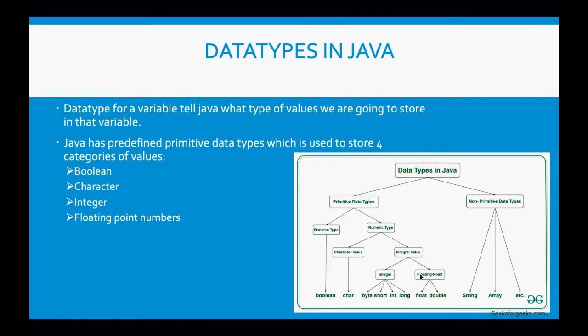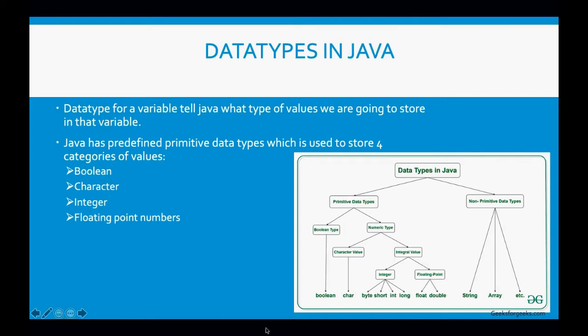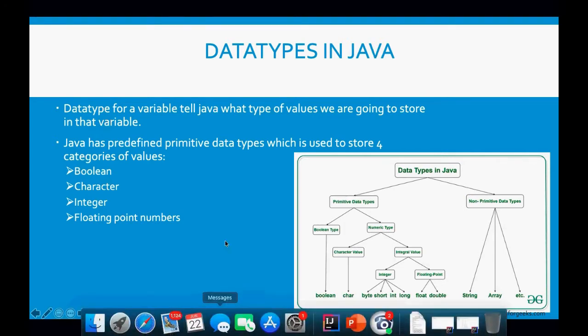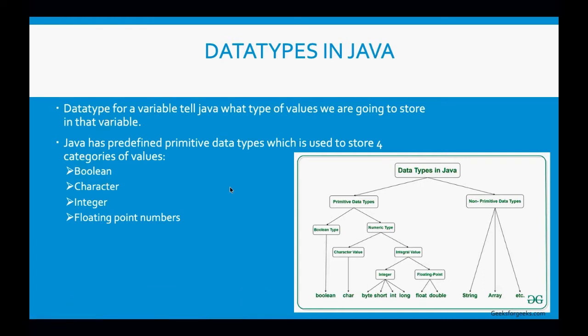Data types in Java — so what do we mean by data types? Data types tell us what type of value is going to be stored for a variable. Data types can be divided into primitive and non-primitive data types.